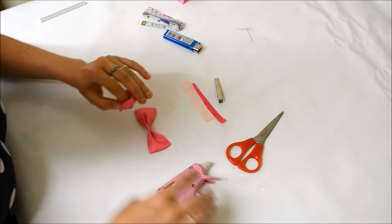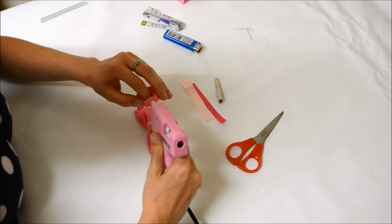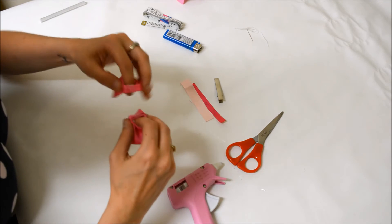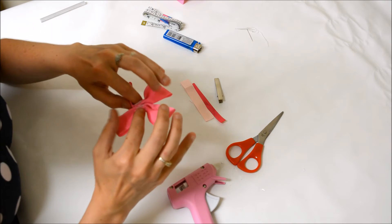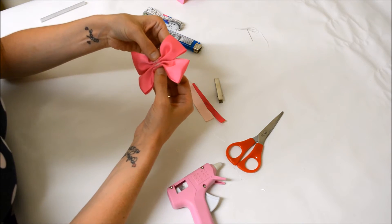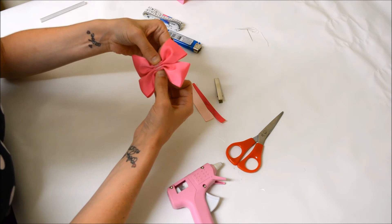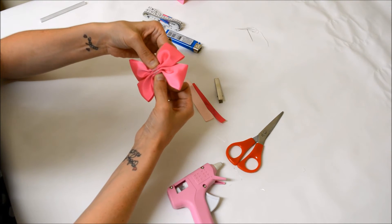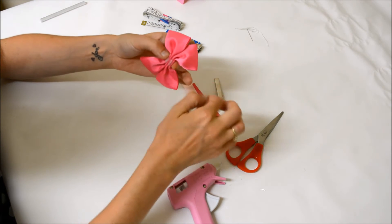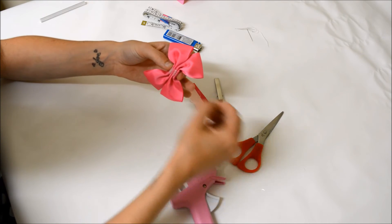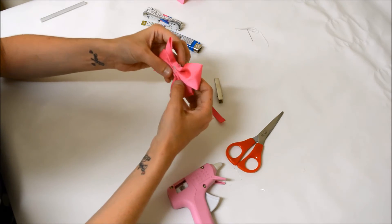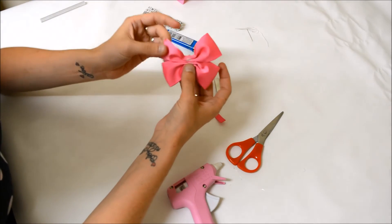Then you want to take one of your bows, it doesn't matter which, and place some glue. Take your other bow and connect them just in the center. Push them firmly together and hold in place until your glue has dried. And there is the basis of your bow.